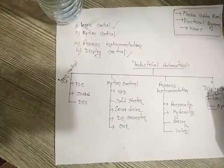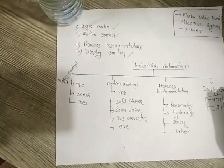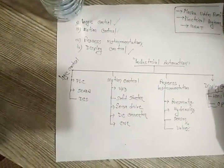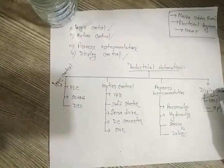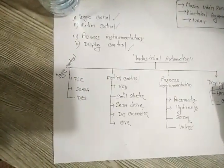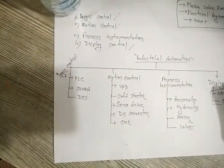First one is logic control, second is motion control, third is process instrumentation and the last one is display control. So let's start and find out each and every part.